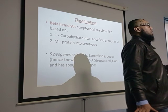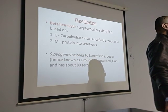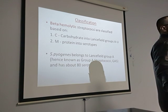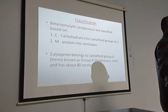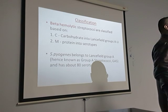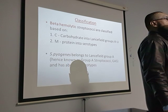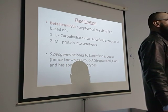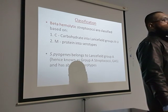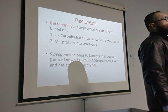The beta-hemolytic streptococci are classified based on their cell wall carbohydrate called the C carbohydrate. Based on this carbohydrate they are divided into groups A, B, C, D, etc. — these are the Lancefield groups, named after the scientist who developed this classification. Within each group, bacteria are further divided into serotypes based on another cell wall component called Protein M.